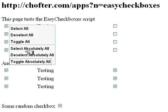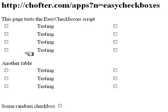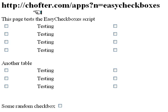Let's say Deselect Absolutely All and all checkboxes on the page are deselected. To install this is very simple — just go to the URL at the top of the video, chofta.com/apps, click on the Install Easy Checkboxes link and you're done.